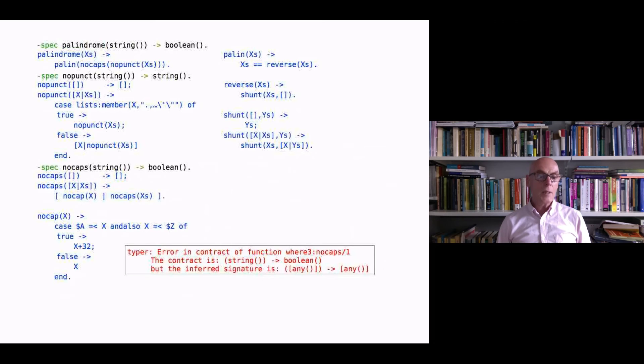If we say something like no_caps takes a string to a boolean, that's not consistent. You can see it says error in the contract of function no_caps. The contract is string to boolean, that's what we said it took, but the inferred signature is list of any to list of any and that's not consistent with what we saw there. So Typer doesn't accept that. We can still compile it. Erlang still accepts it, but Typer has analyzed for us the fact that our annotation is incorrect.